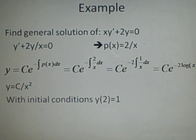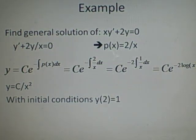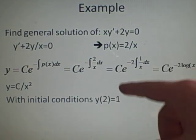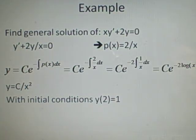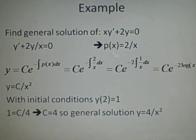Now, if we have initial conditions, this is our general equation, general solution. If we have initial conditions, y of 2 equals 1, this is saying y, when x is 2, is equal to 1. So, we have 1 equals c over 4, with the 4 up, c equals 4. So, the general solution is y equals 4 over x squared.